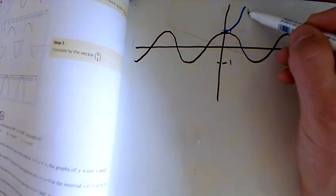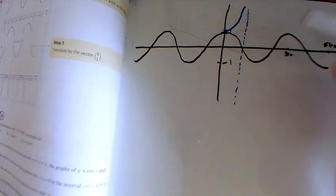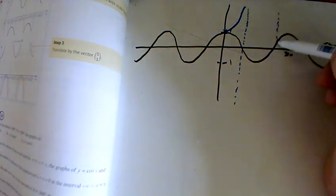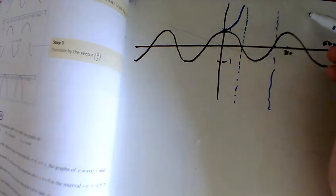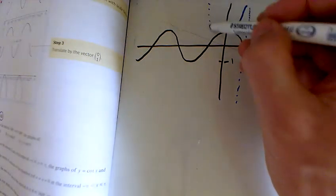At this point here, we're dividing by 0, so we're going to have an asymptote here. In fact, there's going to be an asymptote here as well. So whenever the cos graph is 0, there's an asymptote on the sec graph.